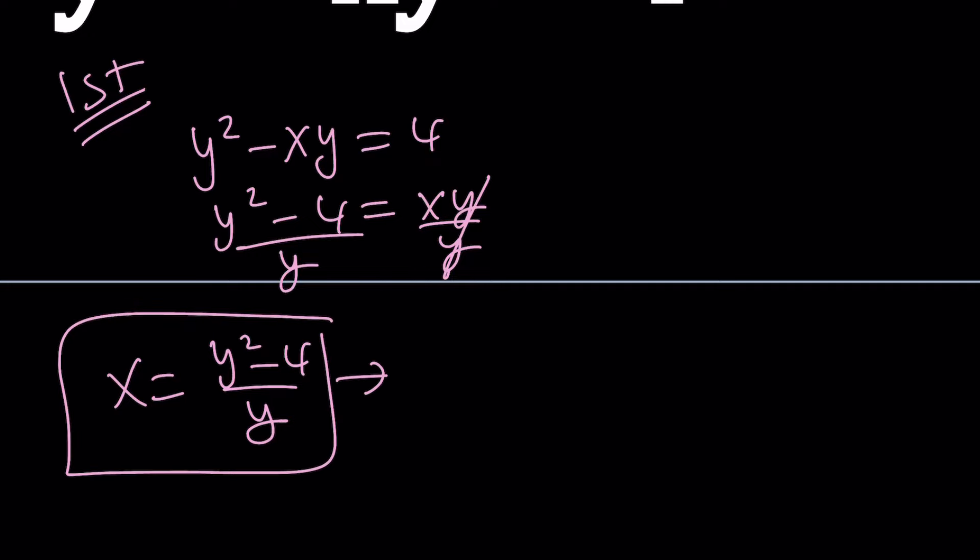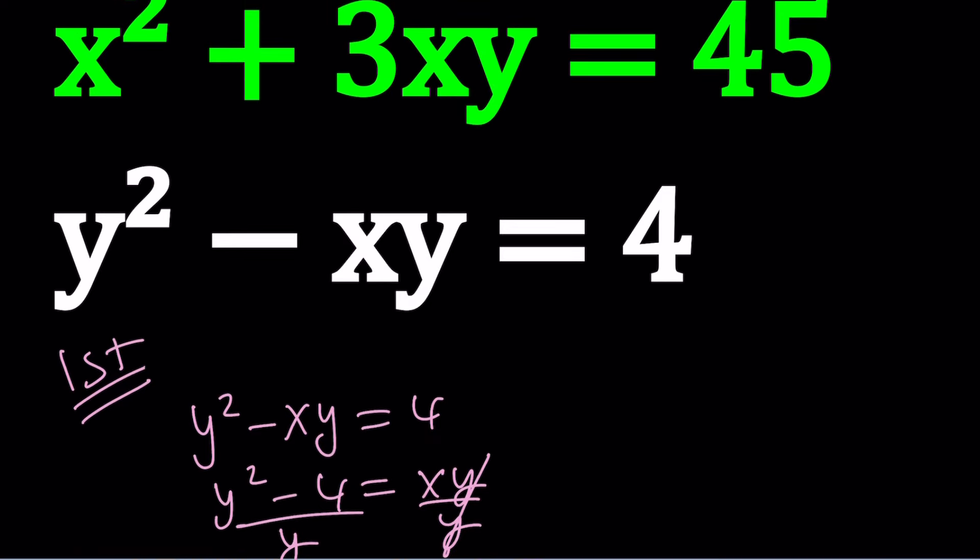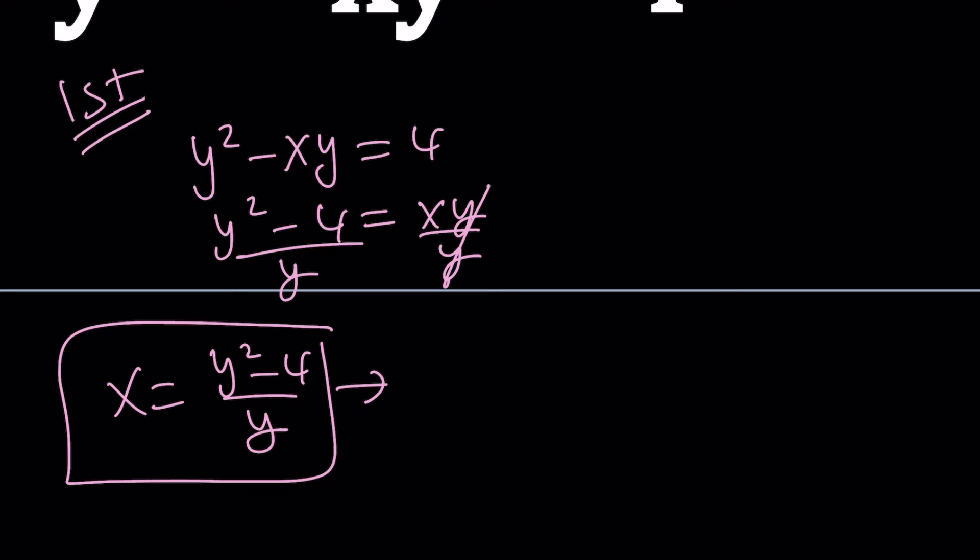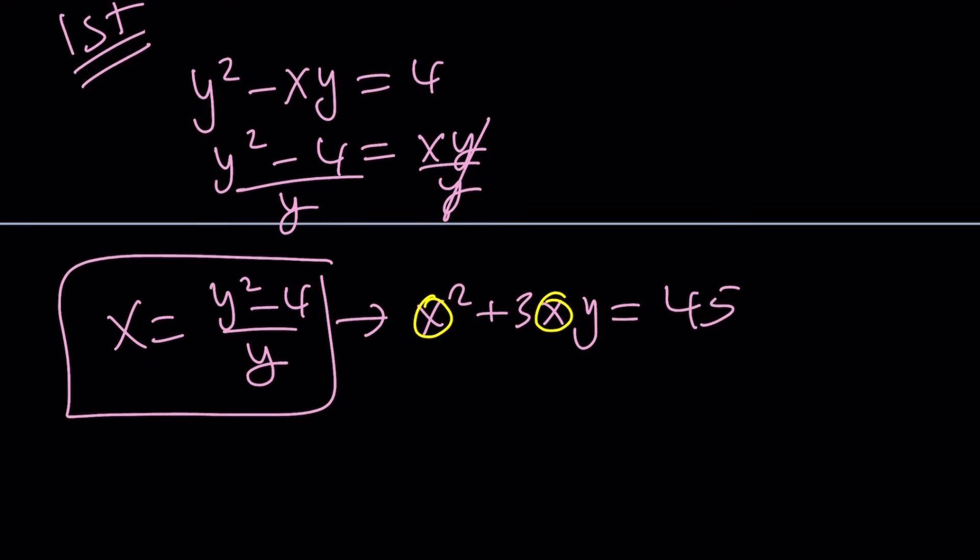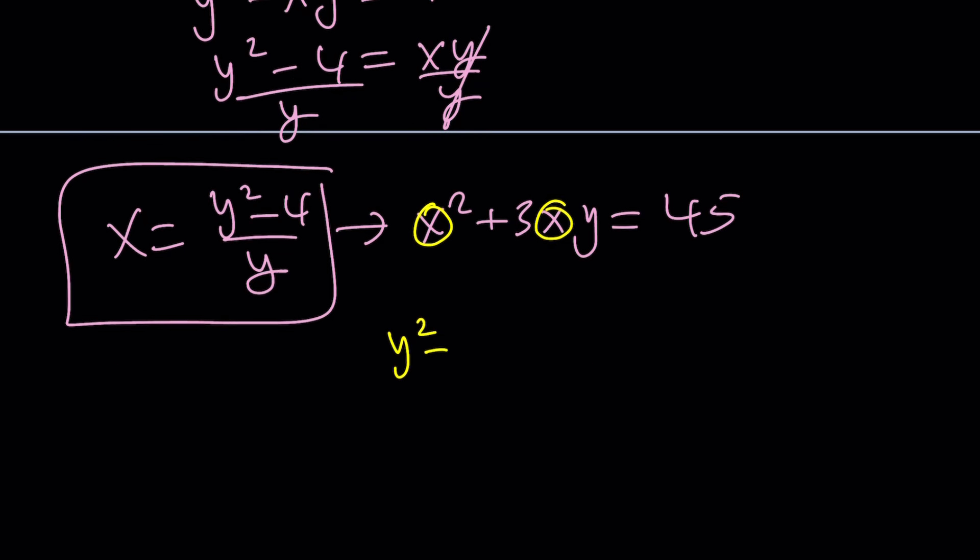This is something I can substitute into the first equation. The top one is considered the first, by the way. I have x squared plus 3xy equals 45. Now let's go ahead and replace the x with what it is. That's going to give us y squared minus 4 over y squared plus 3y multiplied by y squared minus 4 over y. And then the y is going to cancel out. And on the right-hand side, we're going to have 45.